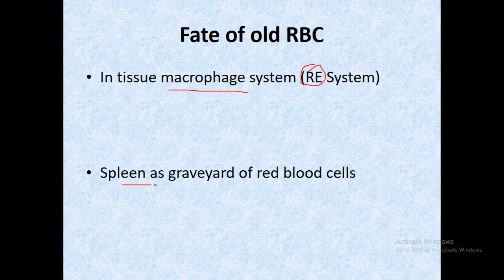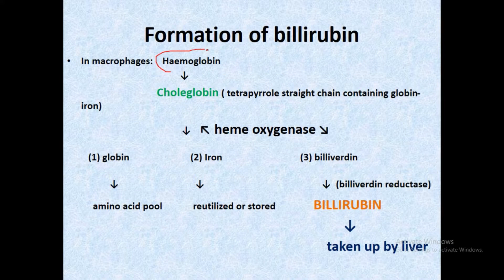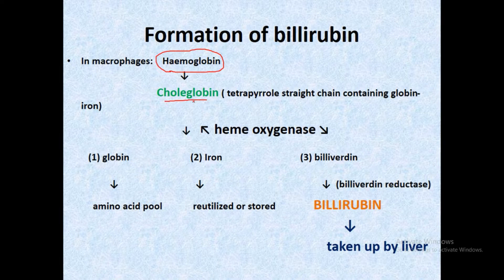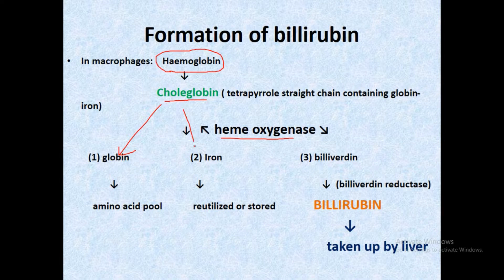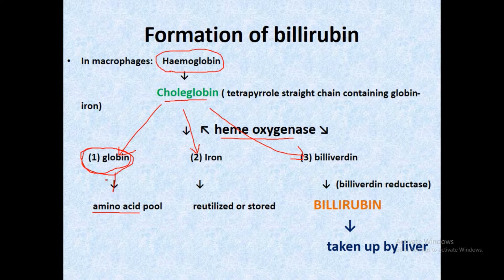The spleen acts as the graveyard of red blood cells. When RBCs break down in the spleen, hemoglobin is released and converted to choleglobin, a tetrapyrrole straight chain containing globin and iron. When choleglobin reacts with the heme oxygenase enzyme, it divides into three components: globin, iron, and biliverdin. Globin, a polypeptide chain, releases amino acids, while the iron is reutilized or stored as ferritin or hemosiderin.